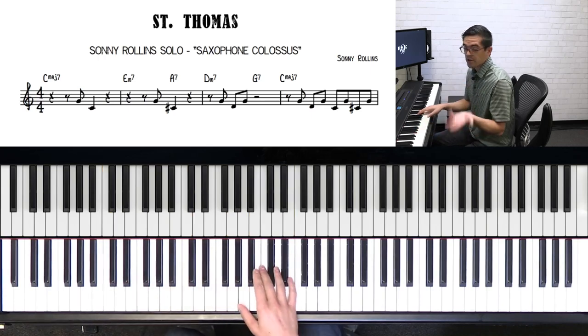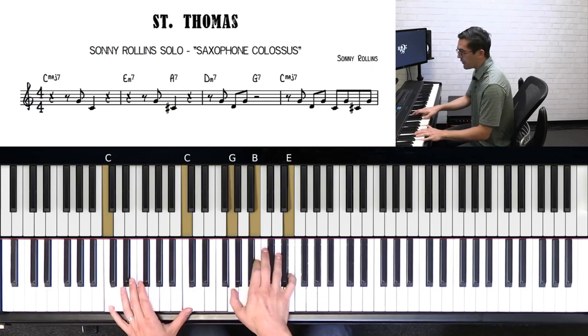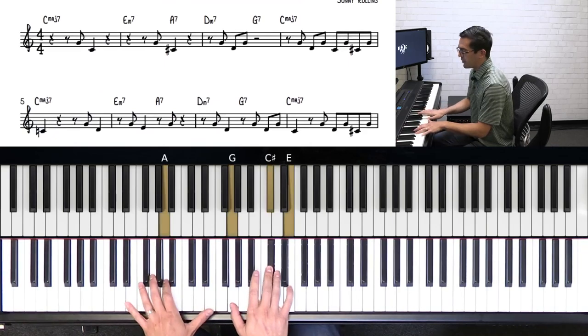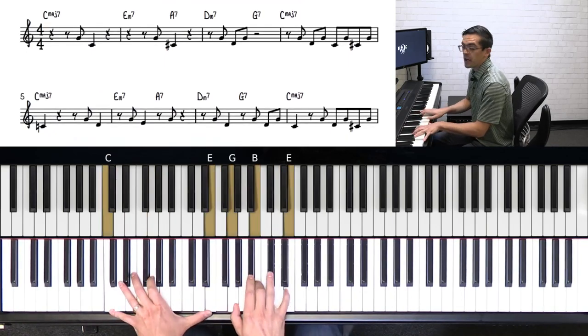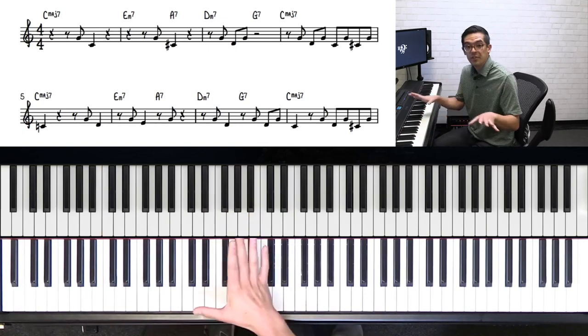And the next four bars is an exact repeat of that. C major 7, E minor 7, A7, D minor 7, G7, C major 7. Great, super simple, super easy.